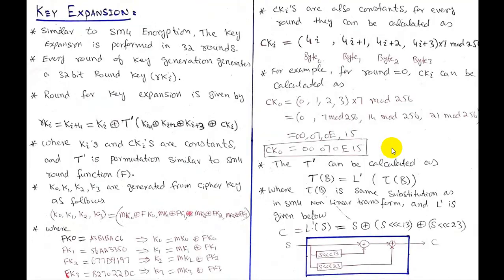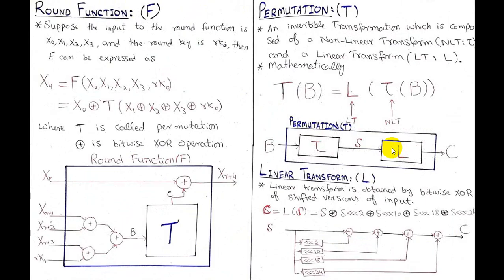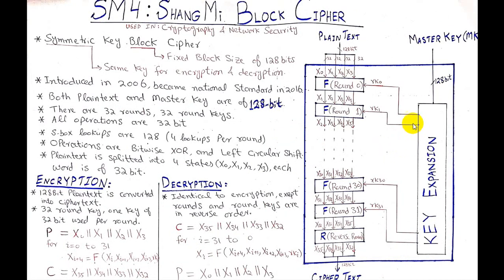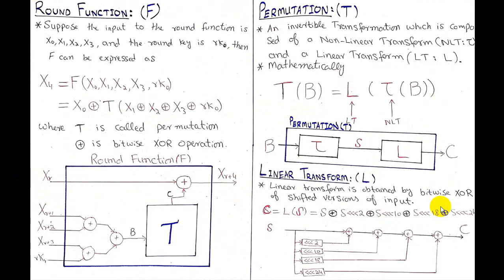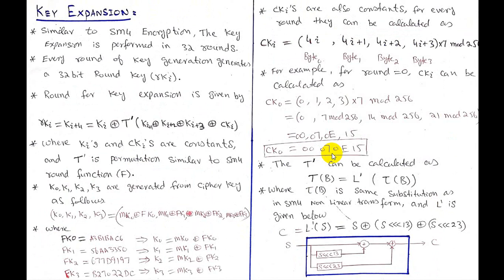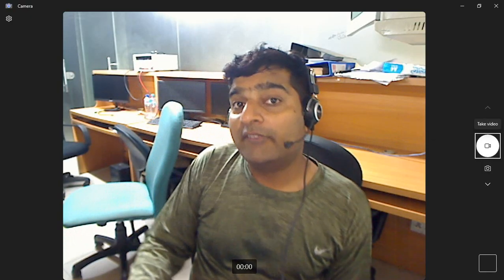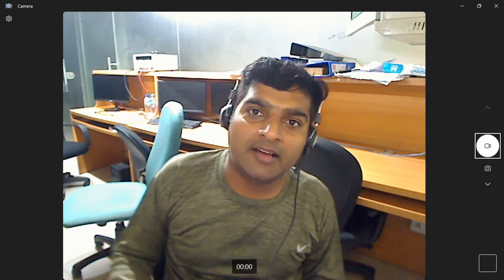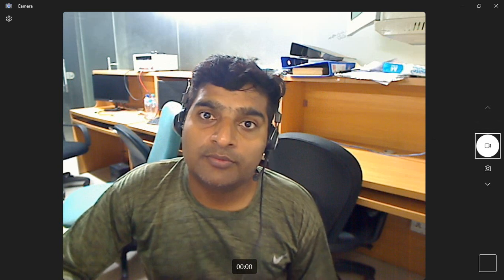In this way the whole SM4 block cipher process has been explained, including key expansion. SM4 consists of an encryption process, a decryption process, a round function, and a key expansion method. The round function consists of permutation, linear transformation, and non-linear transformation, and the same transformations are used for key expansion. I hope you enjoyed the video - if you have further questions write in the comments, and please share with your friends. Thanks for watching.